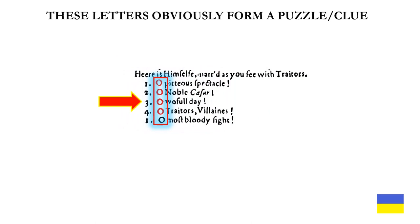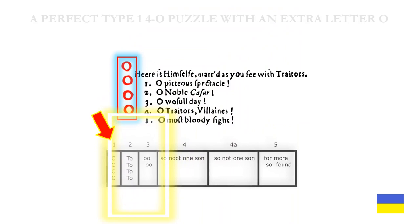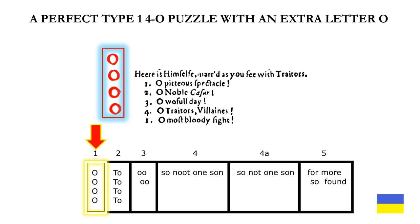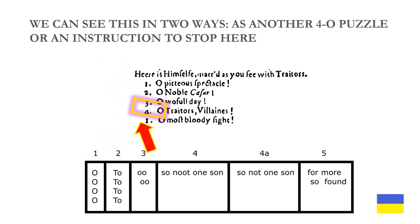These five letters — the five O's along the left-hand column — obviously form a puzzle slash clue. They include a perfect Type 1 4-0 puzzle with an extra letter O. We can see this 4-0 in two ways: as another 4-0 puzzle, or an instruction to stop here.